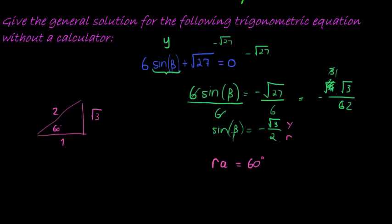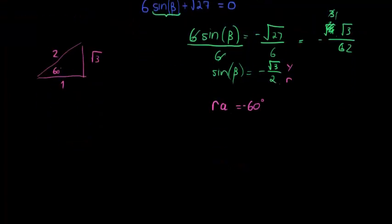60 degrees in a quadrant where sine is negative. So that's either in the third or the fourth quadrant. Fourth quadrant is going to be easiest, we'll just make it negative. And that's my reference angle, I've got it.